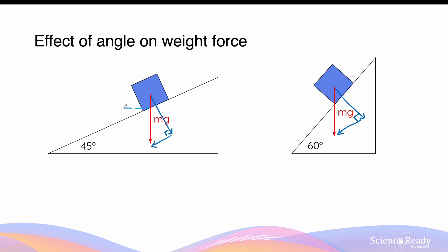If I draw a dashed horizontal line parallel to the ground, this angle here is also 45 degrees because of alternate angles and parallel lines. This angle here would then be 90 minus 45, which gives you 45 degrees as well, because the horizontal line and the downward force vector make a right angle. This angle here will also be 45 degrees because this component of weight force will make a right-angled triangle with the inclined surface.